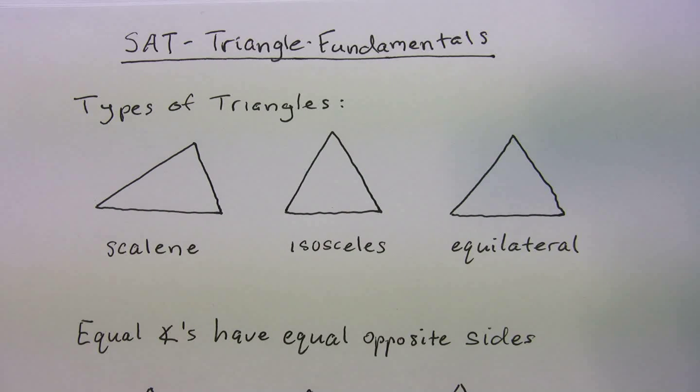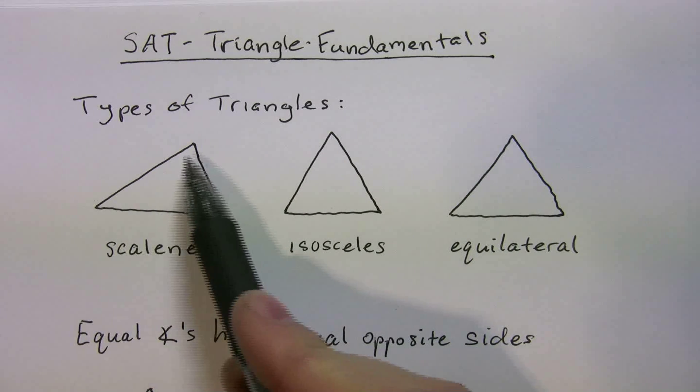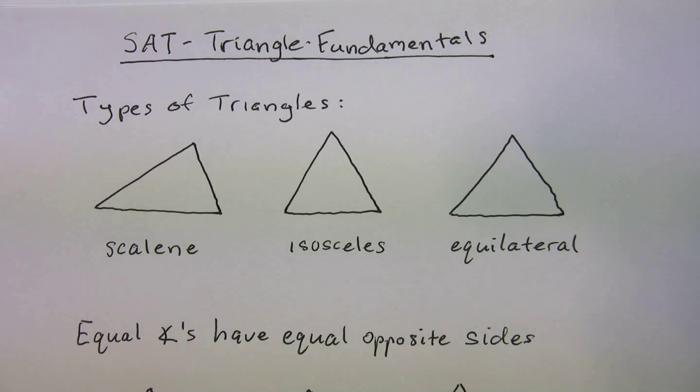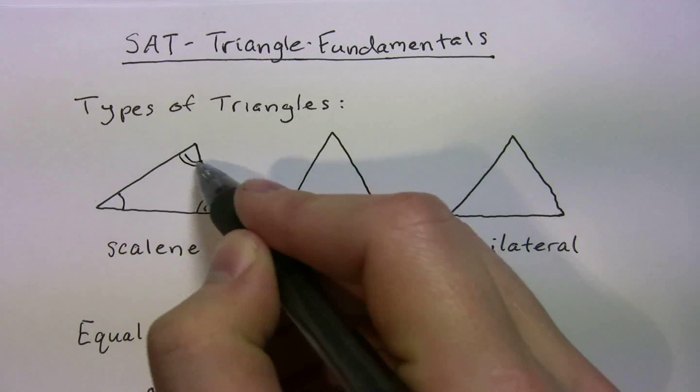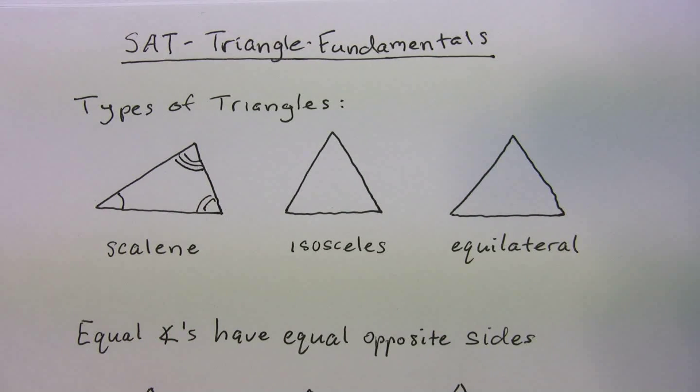So, the first thing you should know, the three basic types of triangles, and I have them right here. In a scalene triangle, none of the angles are equal, so this one is different from that one, is different from that one. So, if none of the angles are equal, none of the sides are equal.